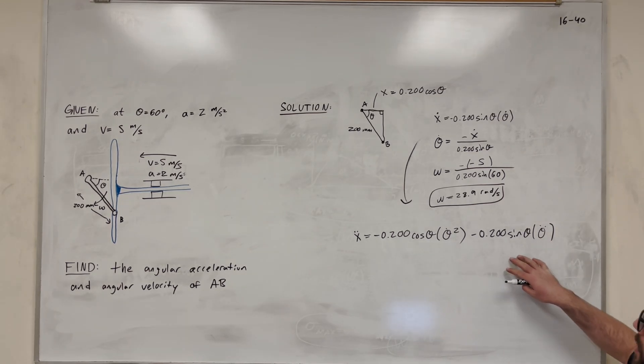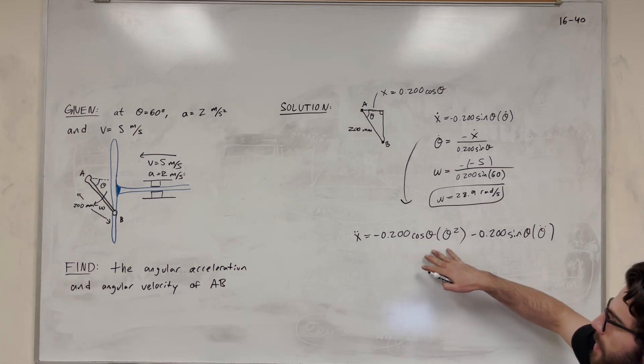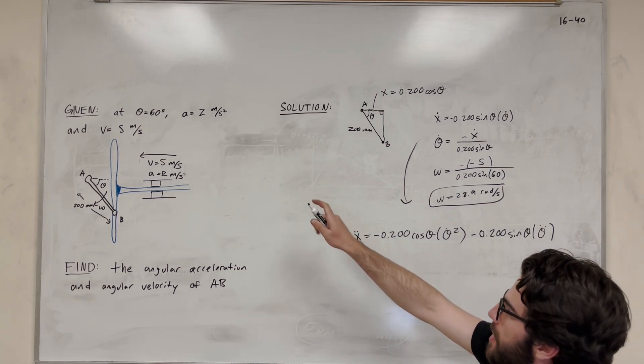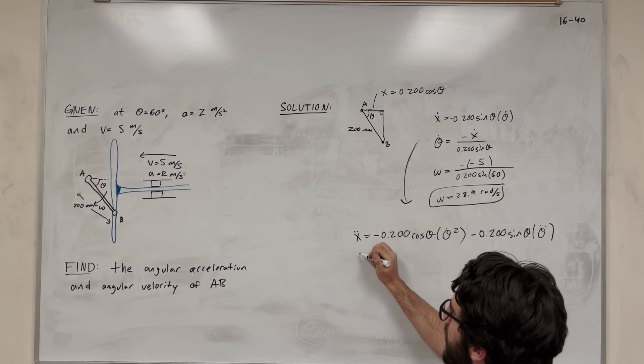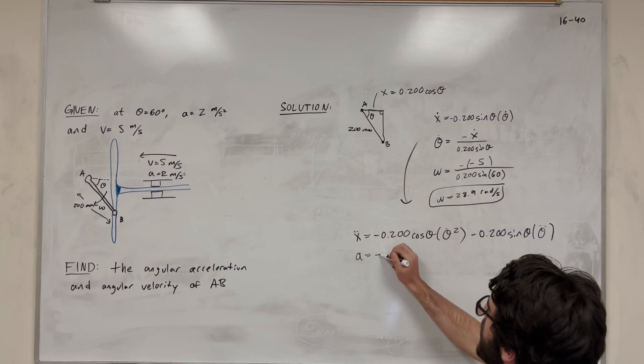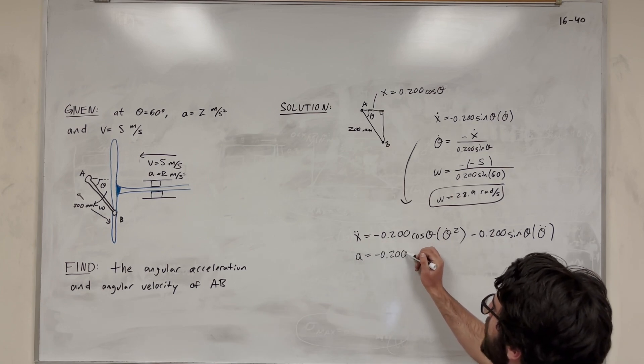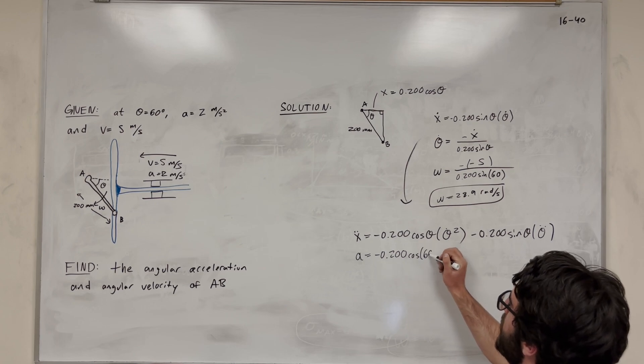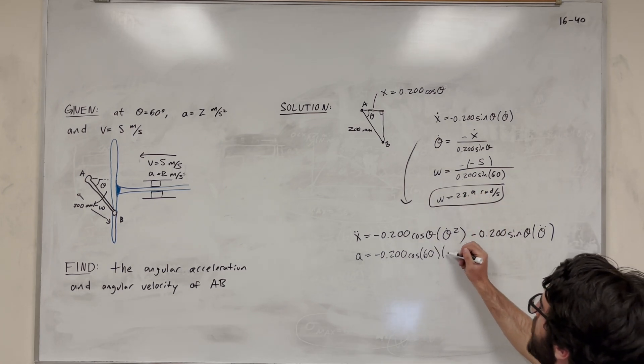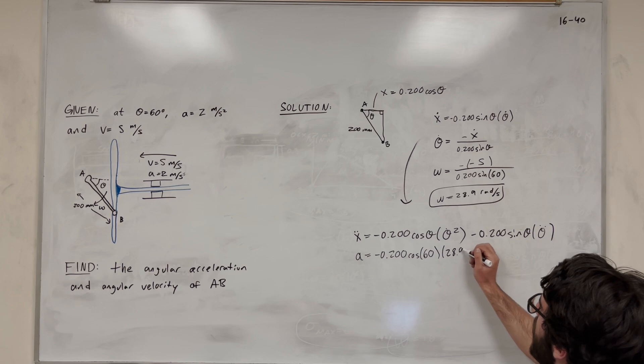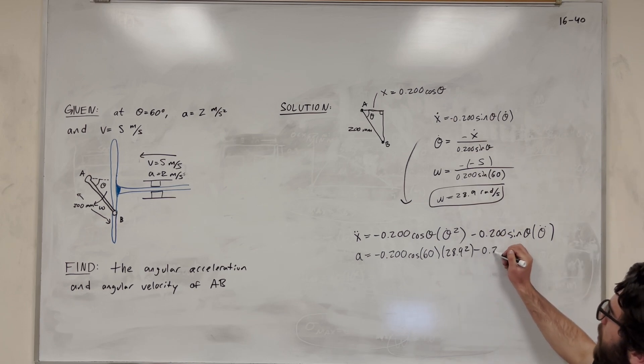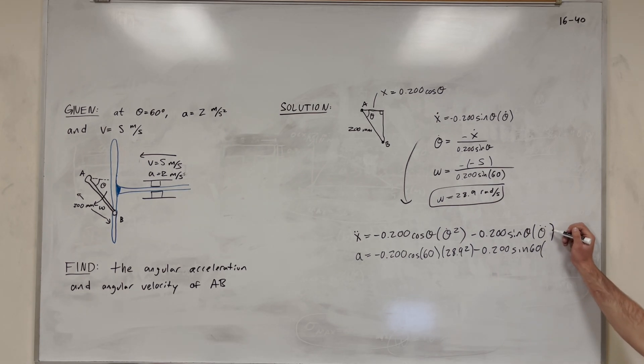All right, so now we have this equation. And what do we do? Let's replace things with what we know. So x double dot is our acceleration. So we're going to replace this with acceleration. It's equal to negative 0.200 cosine of 60. And then theta dot, that is our angular velocity. So we're going to plug in 28.9 squared. Then we can subtract again 0.200 sine of 60 degrees. And then angular acceleration is equal to theta double dot. So we replace this with alpha. So this is now our unknown.